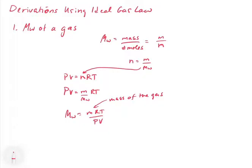In that experiment, we calculate the molecular weight of an alcohol, which we evaporate into the gas phase. We then measure its pressure, volume, and temperature. When we condense it back, we can get the mass of the liquid alcohol and compute its molecular weight. That's the first derivation. The second derivation is where we can determine the density.